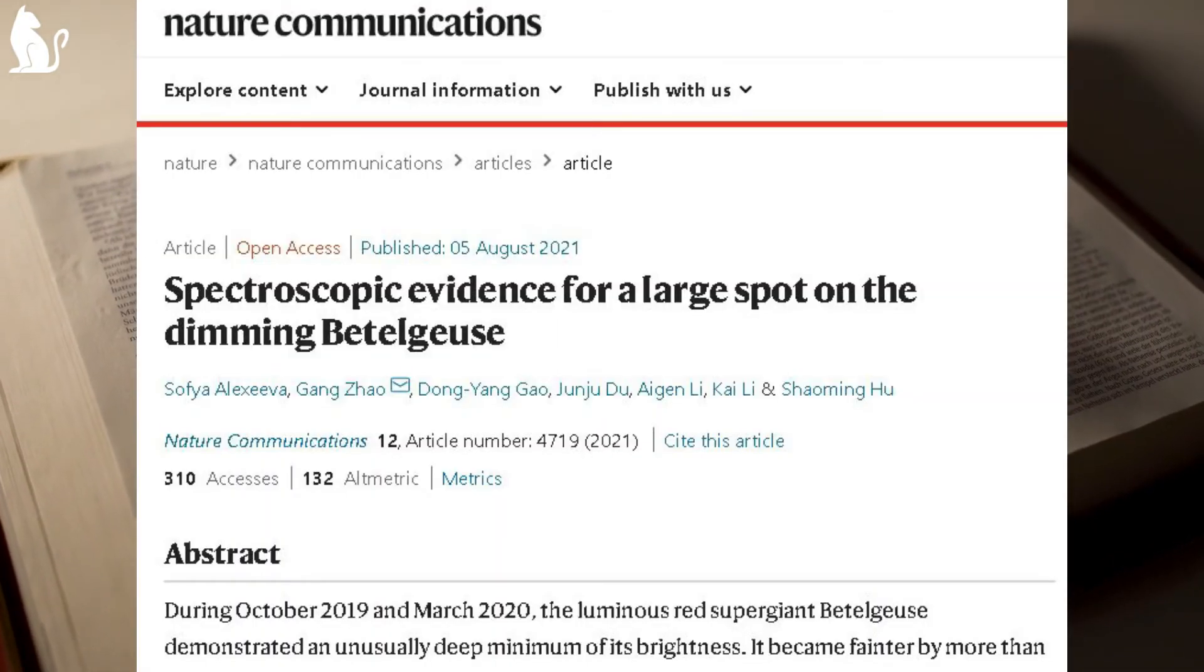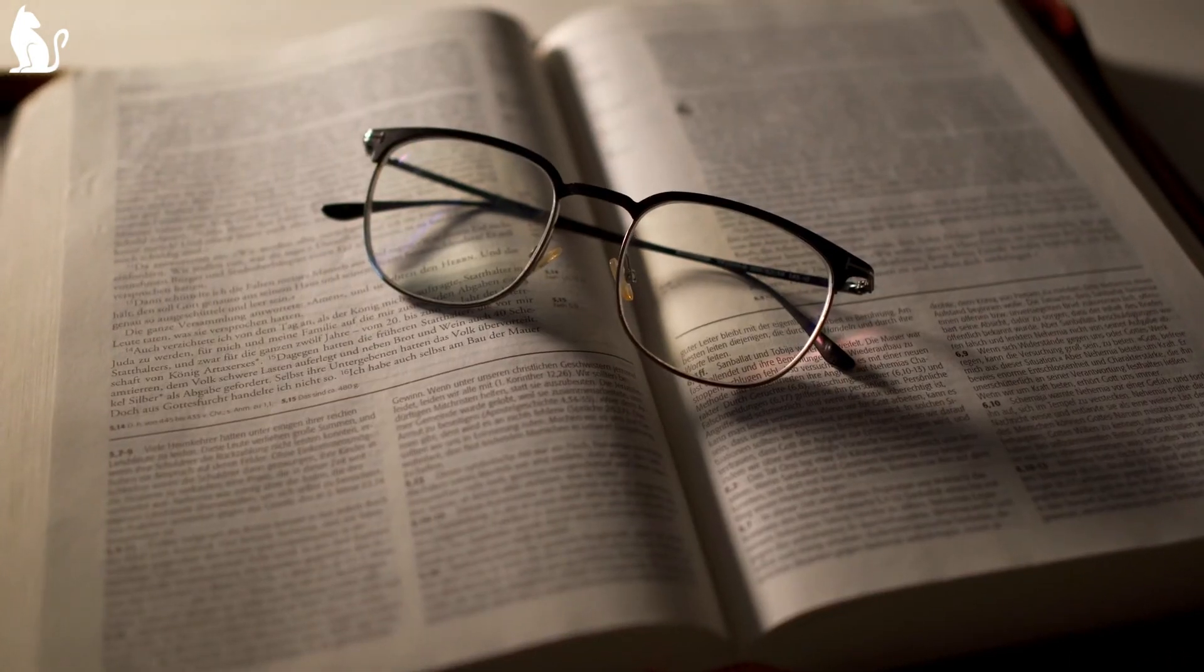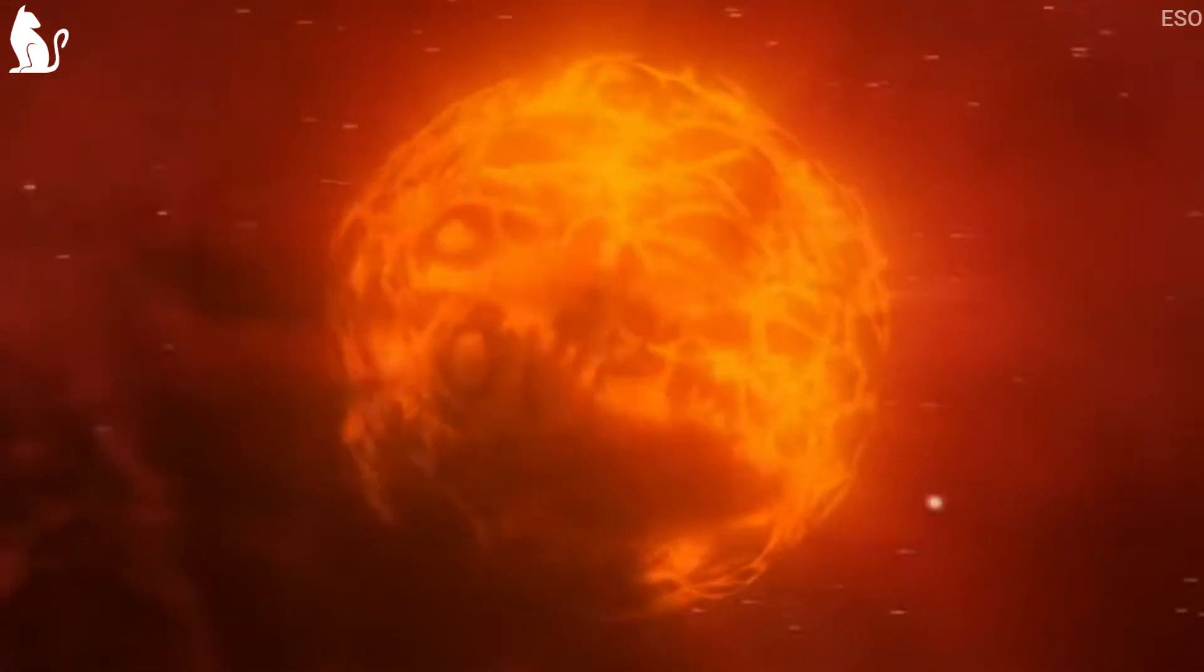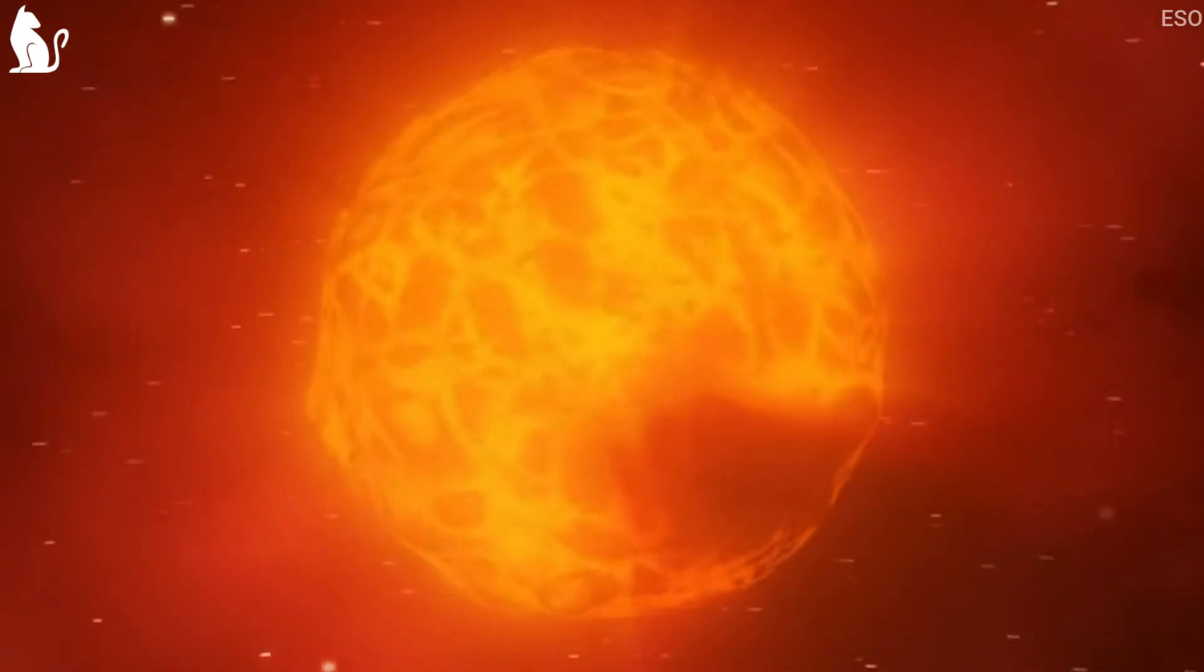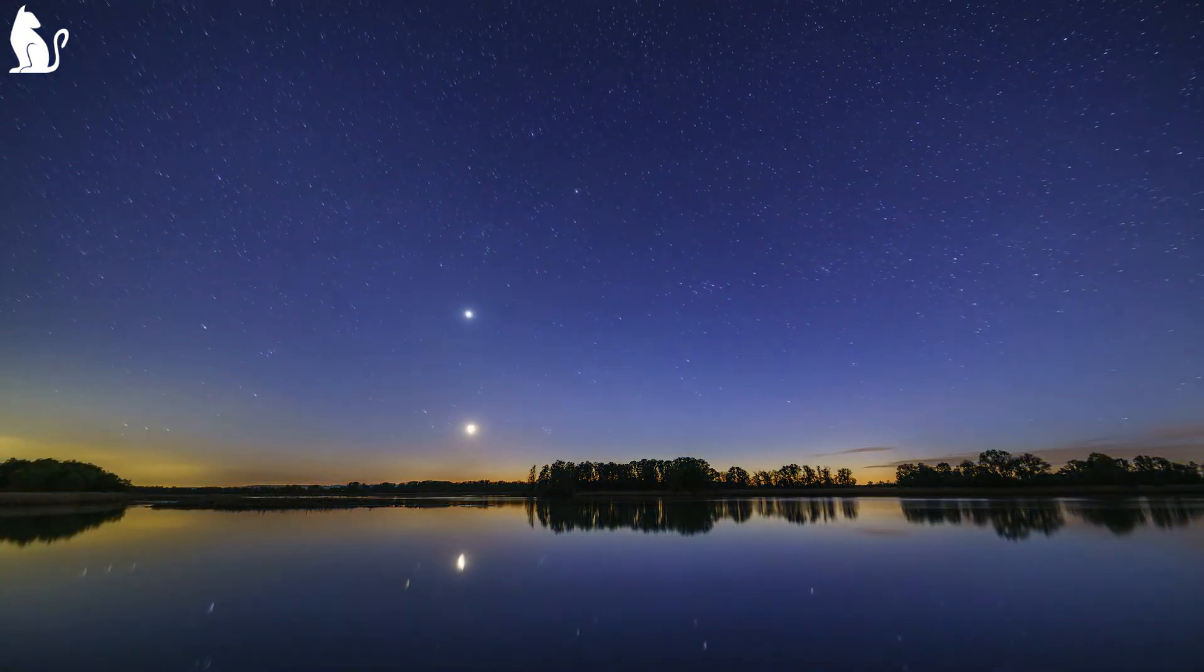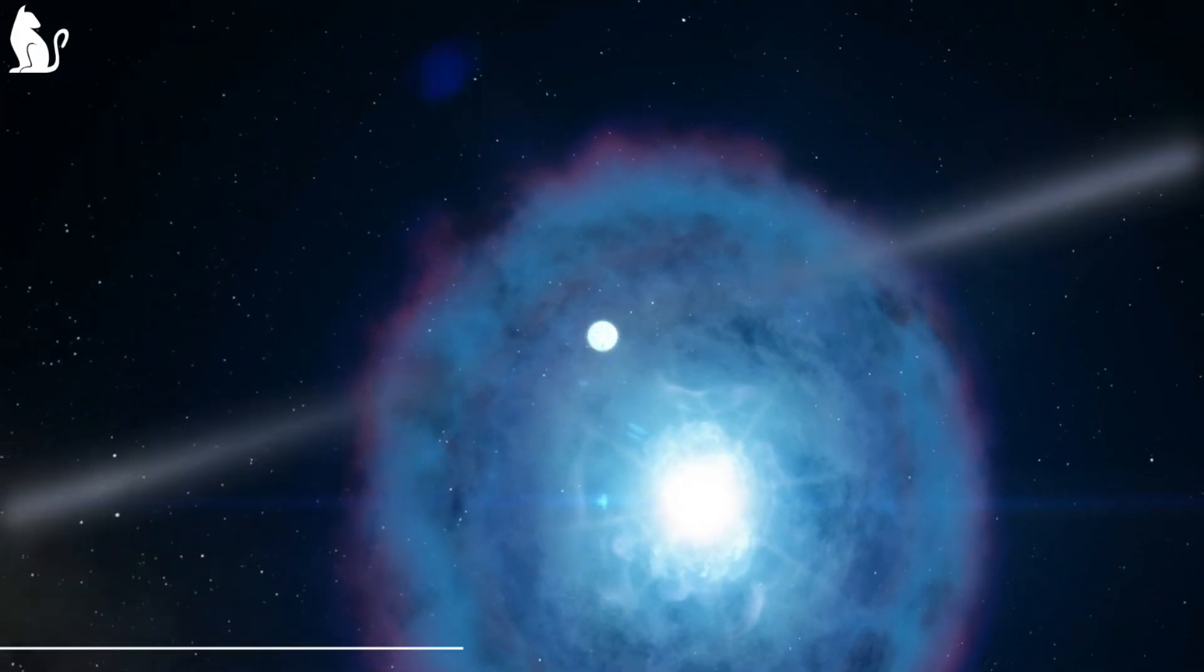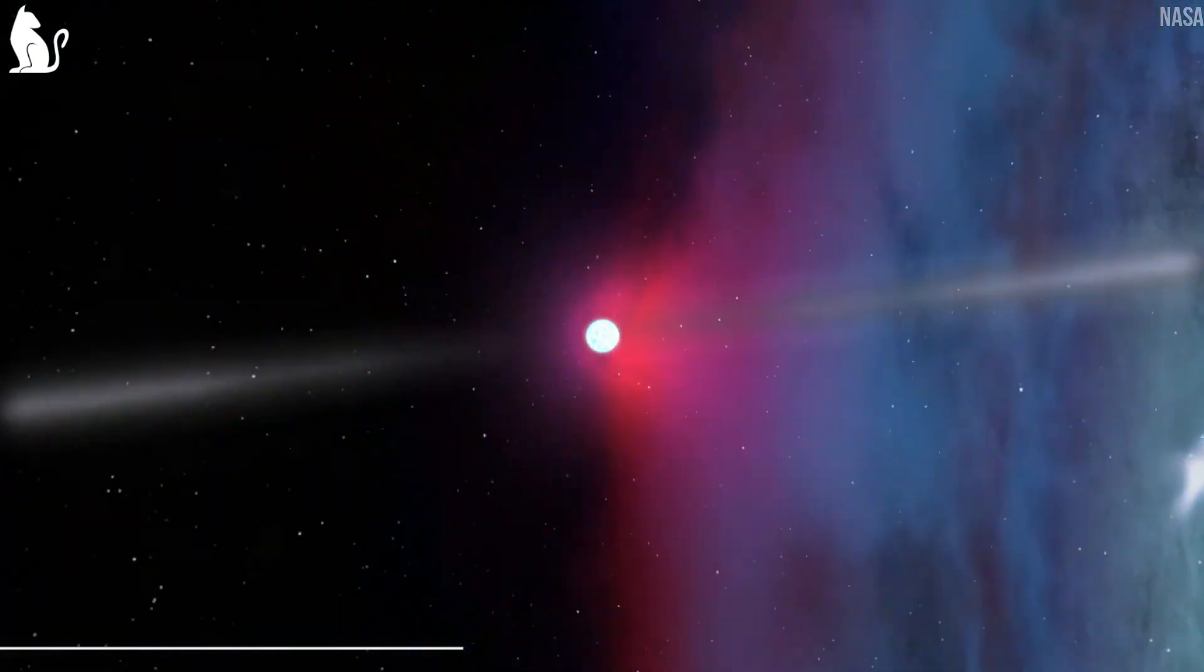A recent study just published on the 5th of August says something interesting about the dimming of the star. This study shows evidence of a large spot on the surface of Betelgeuse. The study led by Dr. Sofia Alexeeva argues that dimming was indeed occurred by dropping its effective temperature by at least 170 K on 2020 January 31, which can be connected to the emergence of a large dark spot on the surface of the star. This study includes spectroscopic evidence for their claim.